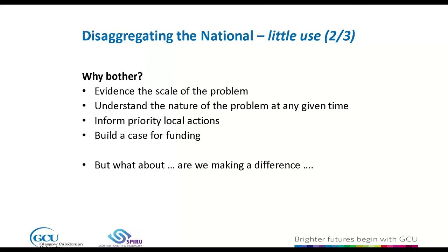These national data disaggregated locally may be of little use, but they can allow us to evidence the scale of the problem locally — and they often appear in local child poverty action reports. Things change through time, and we'd like to think that in future years the actions taken locally and nationally will be reducing child poverty. So we do need to understand the nature of local poverty at any given time, and these data can inform local actions and help build a case for funding.